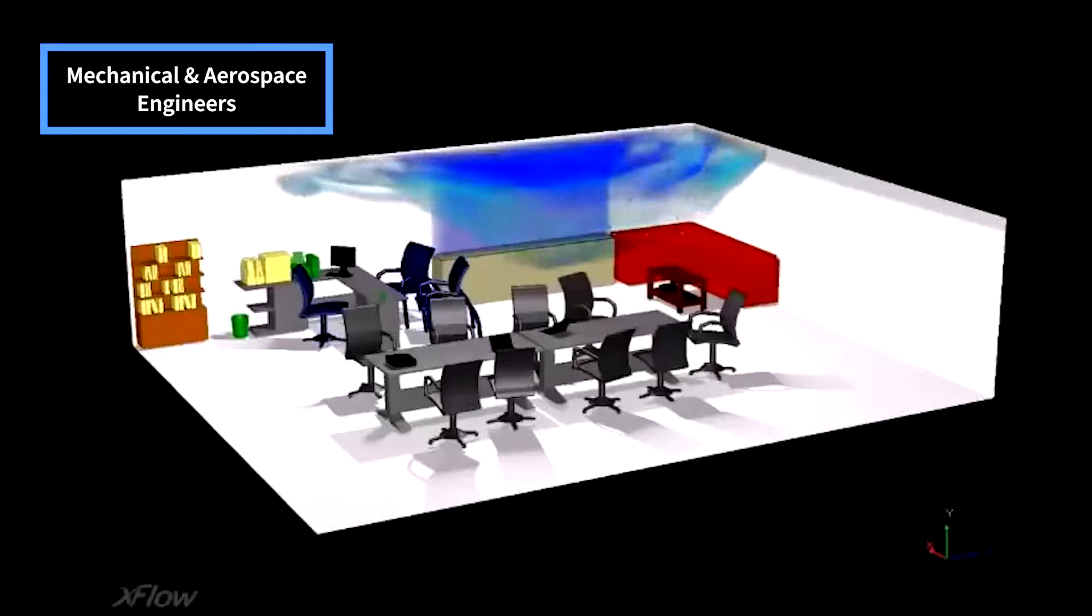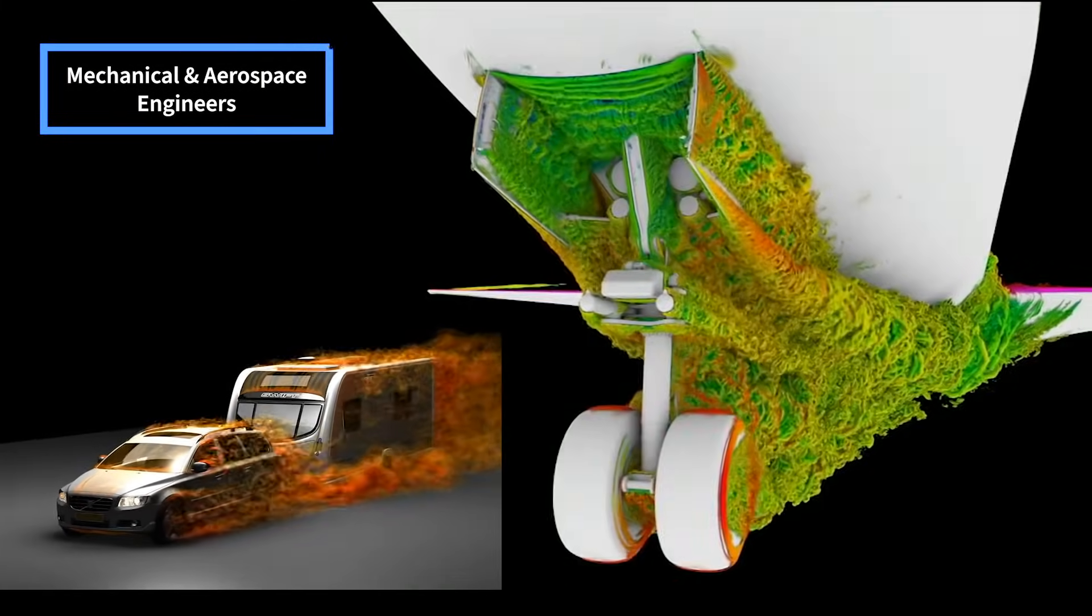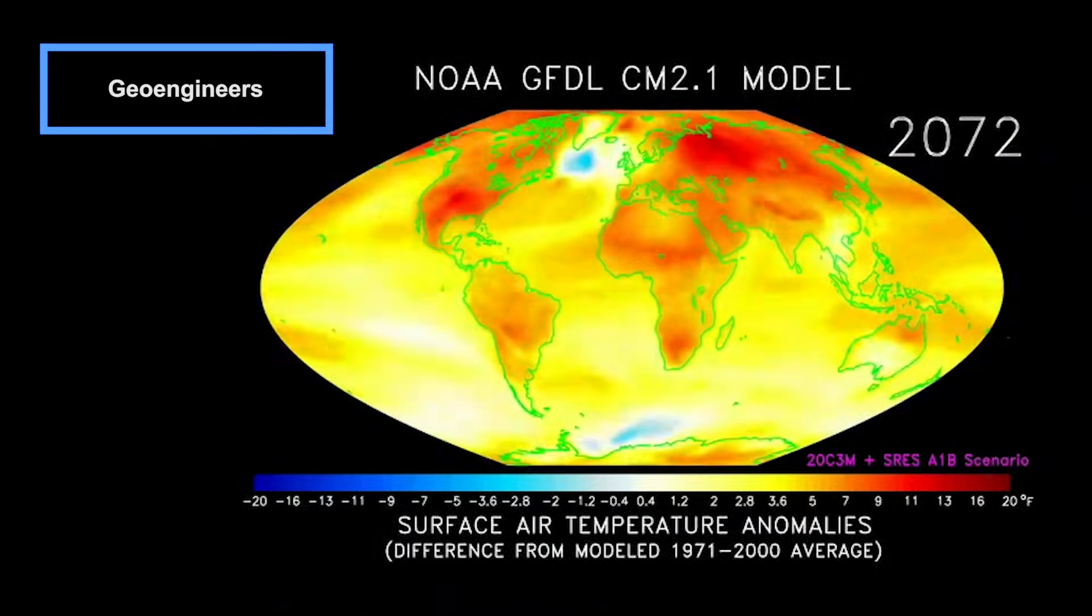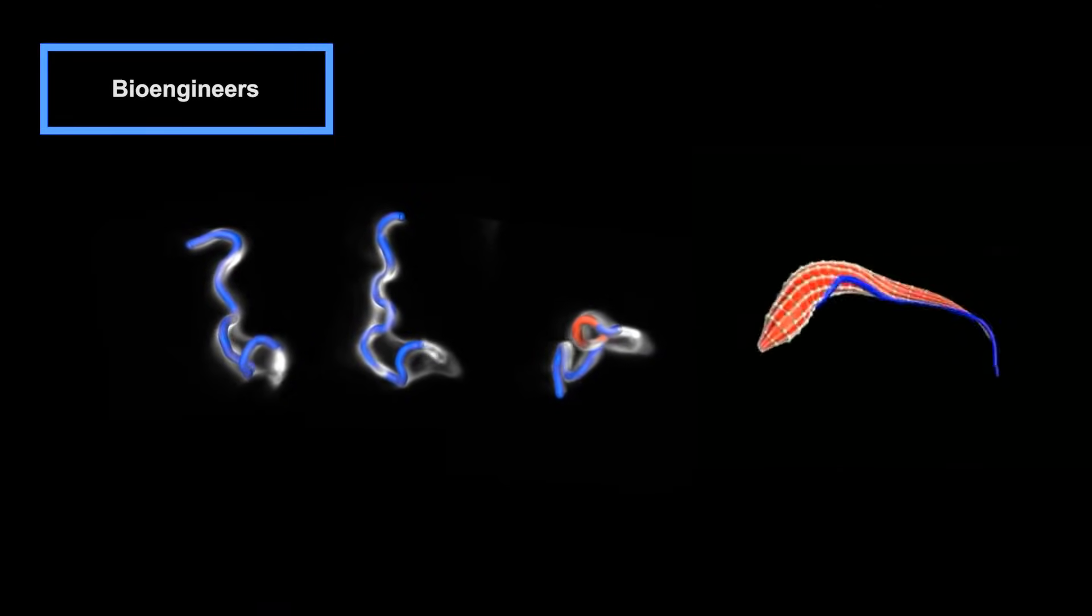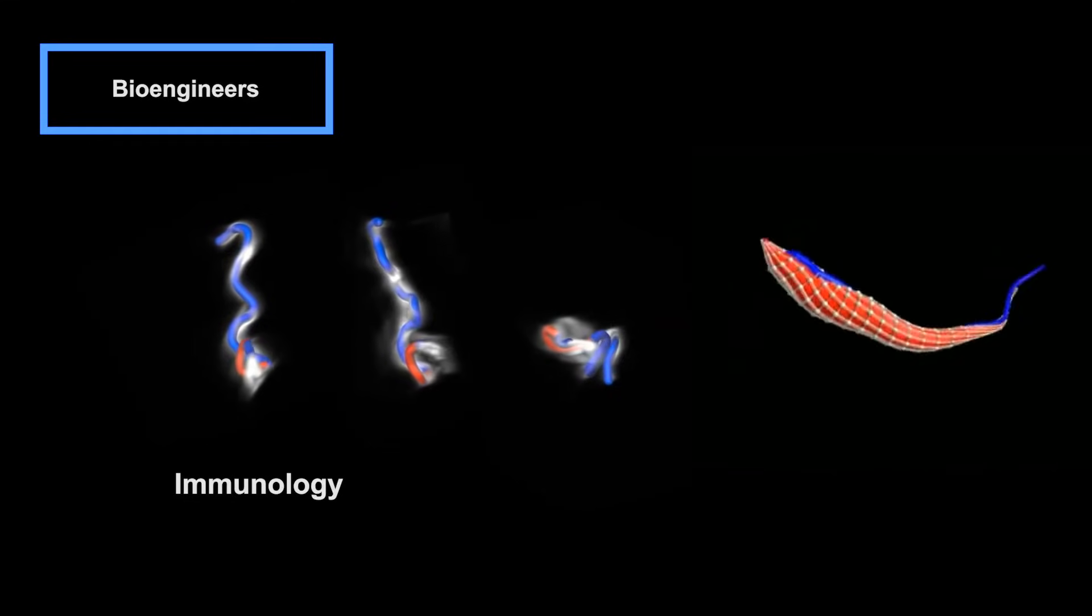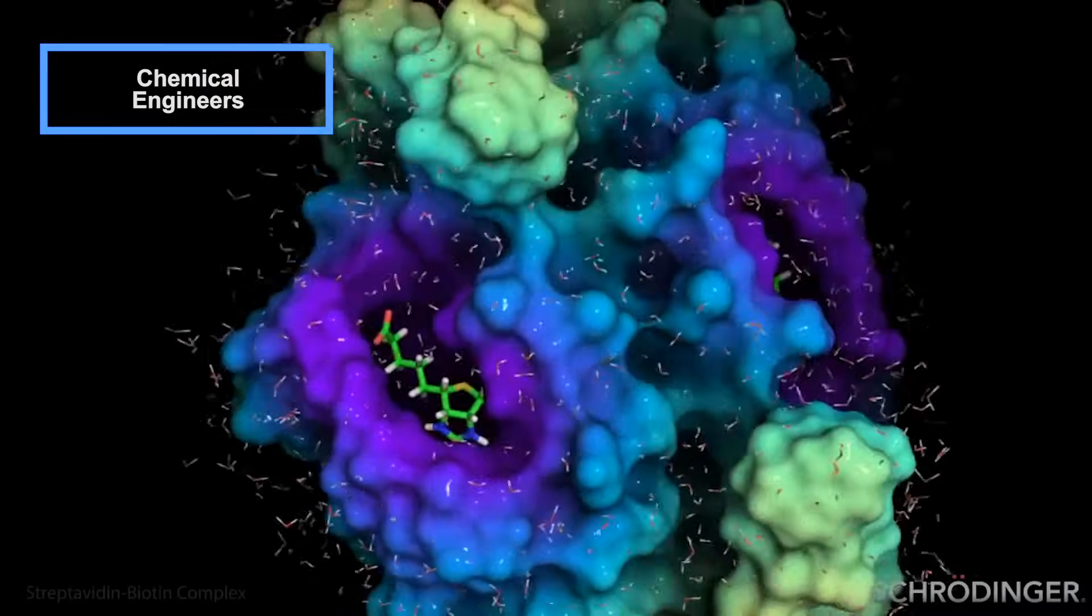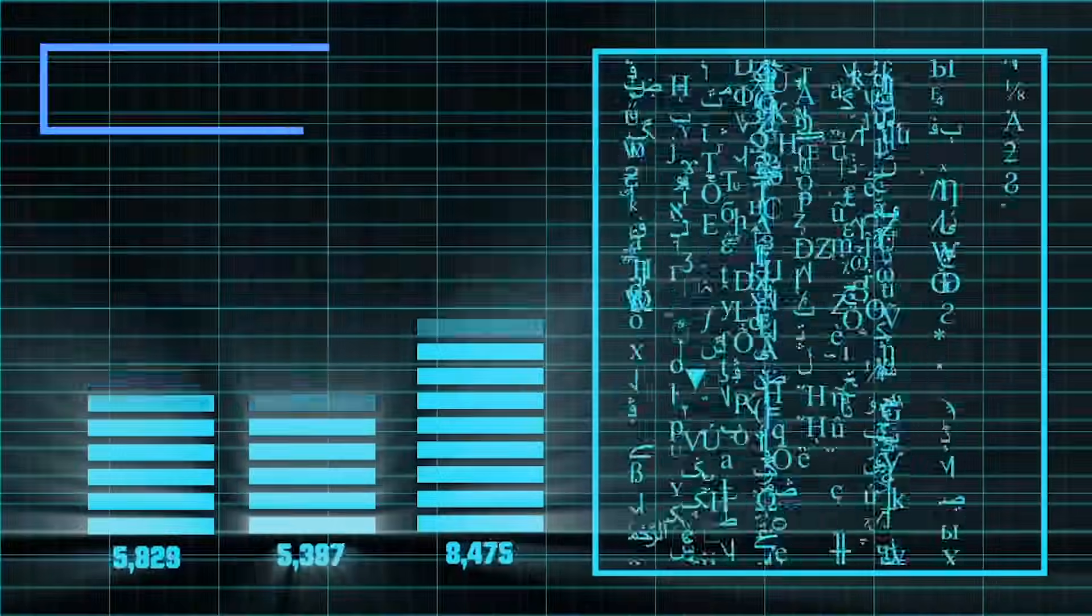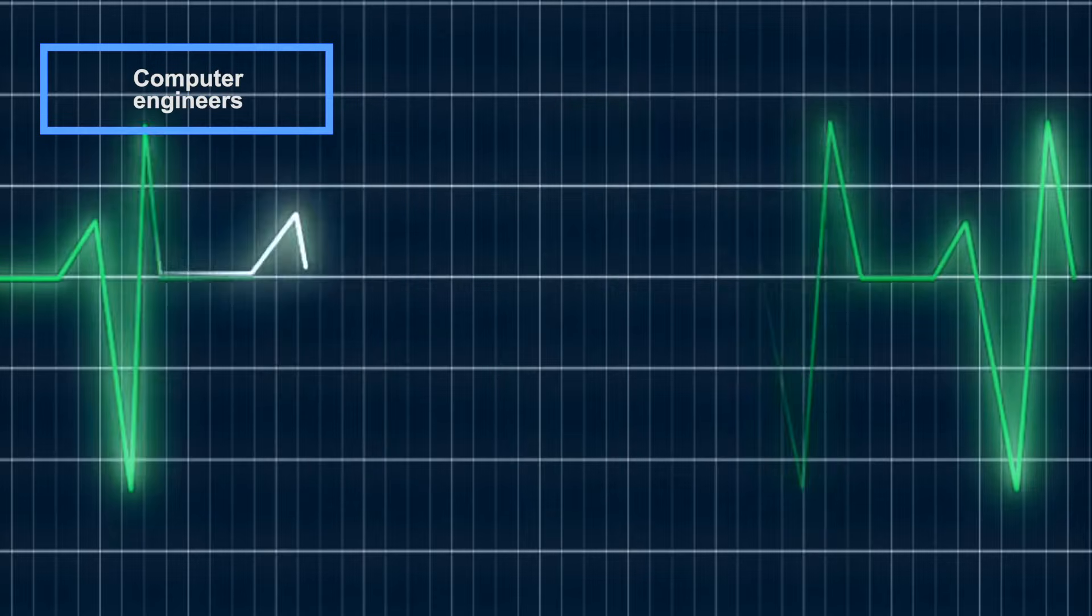Mechanical and aerospace engineers use computational fluid dynamics to optimize ventilation systems and design aerodynamic cars and airplanes. Geoengineers use numerical climate models to study climate change and global warming. Bioengineers use systems biology to understand immunology, cell biology, and genomics. Chemical engineers use computational chemistry to develop new drugs. And computer engineers and data scientists use machine learning for speech recognition, healthcare, and fraud detection.